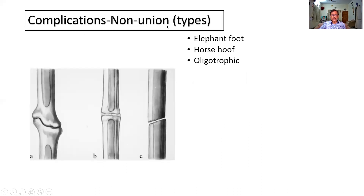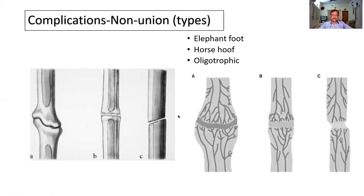Non-union — there are some types. Non-union means the fractured bone is not uniting. Here it is fraying and growing apart — this is called elephant's foot. Sometimes it is almost like the hoof or leg of a horse. And sometimes it is oligotrophic — it becomes narrower and does not join properly. In all cases, the bones do not join and it is called non-union. Obviously the help of an orthopedician is needed. These are the vascular counterparts — all are supposed to be hypervascular: elephant, horse, and oligotrophic.